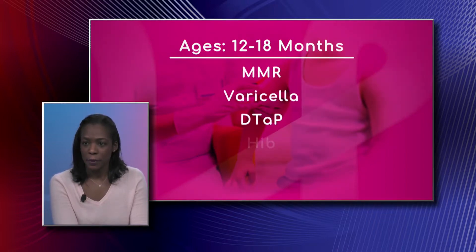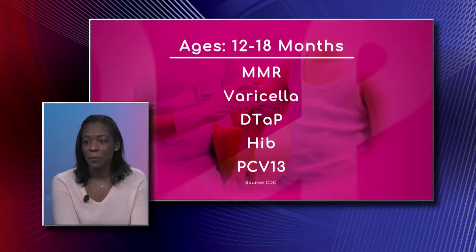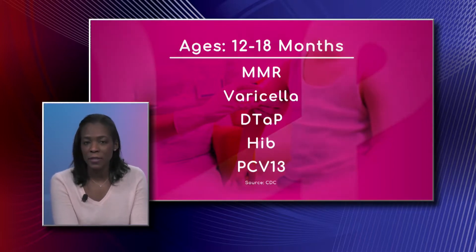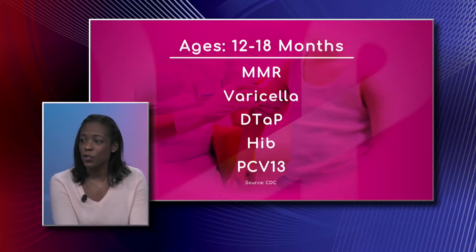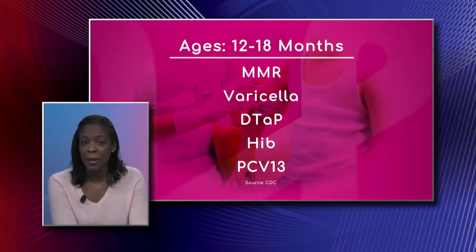Now the child is getting older, so let's look at the next one, which is 12 to 18 months. Right now we have the famous MMR. So at 12 to 18 months we give the MMR, the varicella, the DTaP, the Hib, and the Prevnar. The DTaP, Hib, and Prevnar are all booster doses once again. Evidence shows that the response to the MMR vaccine is better after nine months of age, because the memory cells are not as mature and able to respond the way they should. For MMR specifically, you want to give it anytime after 12 months of age for lifetime immunity.